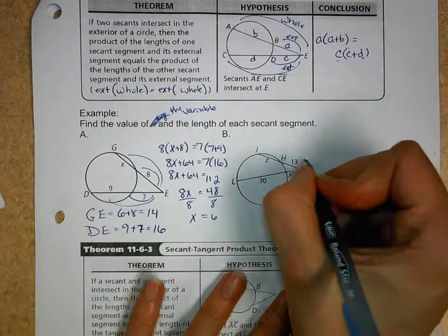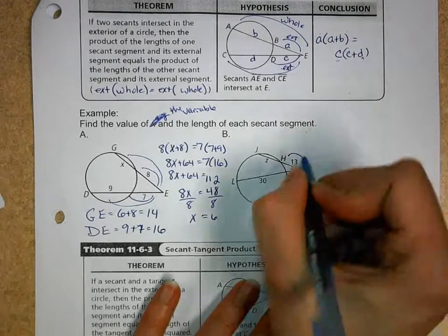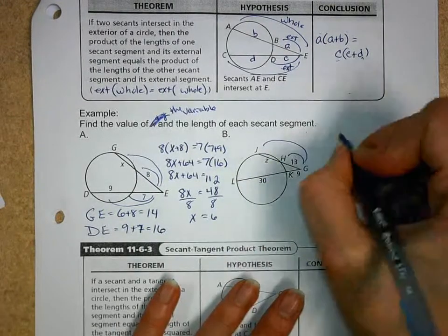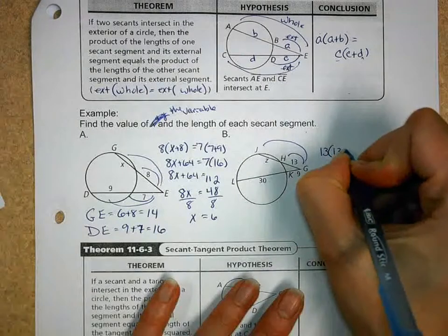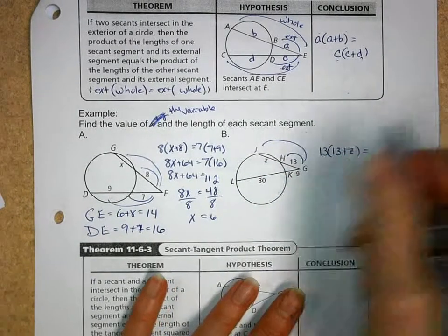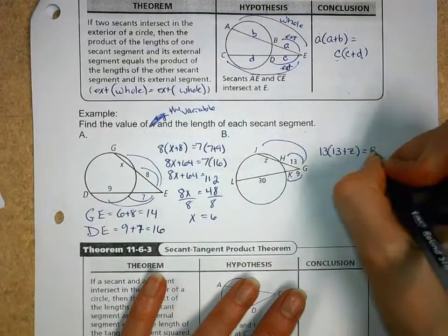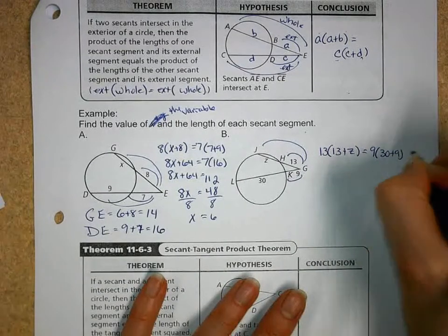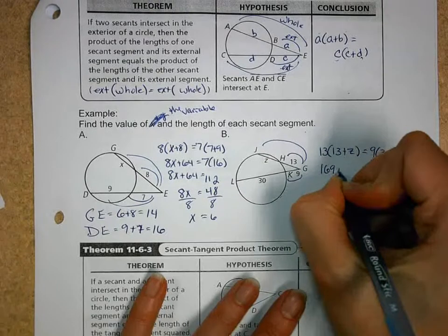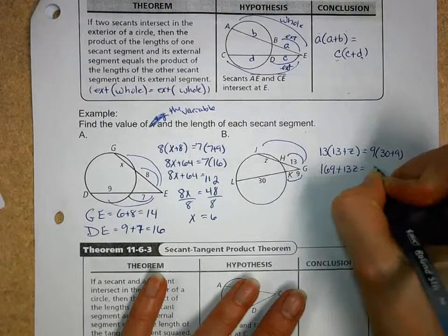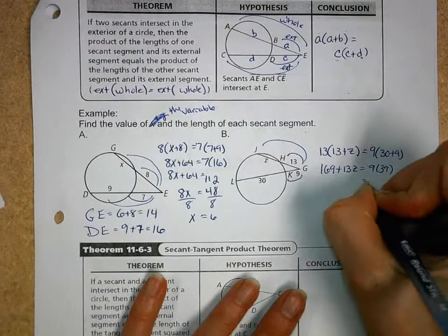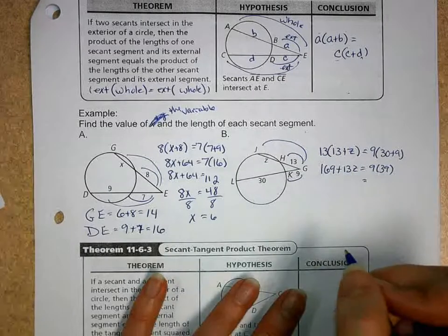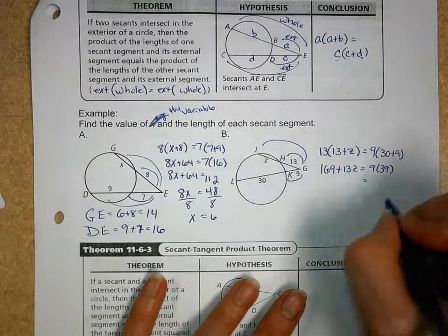Okay. Do the same type of idea here. We have the exterior times the length of the whole thing. So we got 13 times the length of 13 plus Z is equal to the exterior 9 times the length of the whole thing, 30 plus 9. So I get 169 plus 13Z equals 9 times 39. It's 9 times 39 in this case. It should be 351.